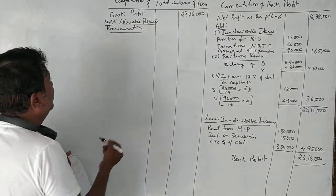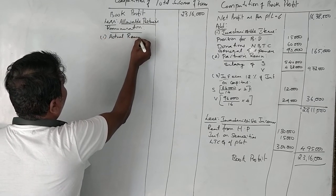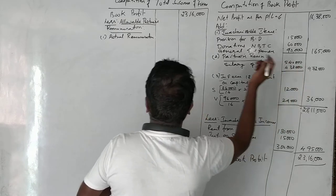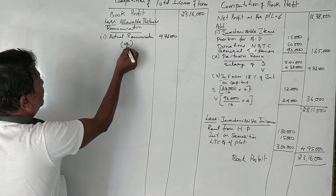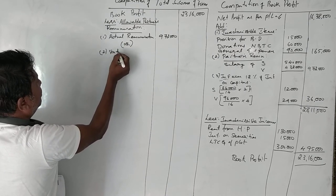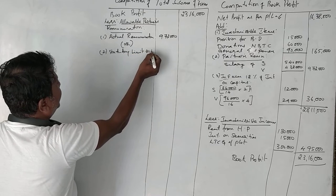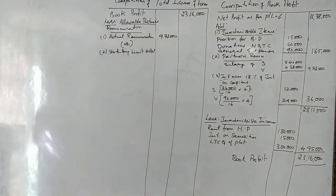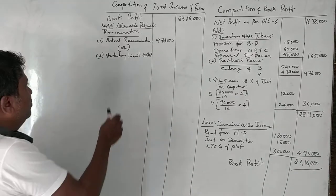In computing total income of the firm, we start with book profit of ₹23,16,000 and deduct allowable partners' remuneration. First we find the actual remuneration paid to partners, which is ₹9,72,000, and compare it with the statutory limit under Section 40(b). Since the book profit is more than ₹3,00,000, the statutory limit is calculated in two parts.